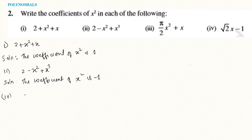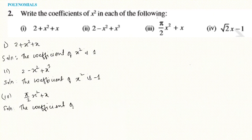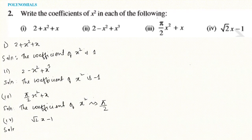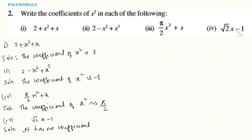Number three: (π/2)x² plus x — the coefficient of x² is π/2. Number four: √2 x minus 1 — there is no x² term, so it has no coefficient of x².